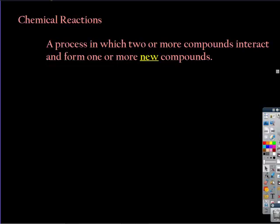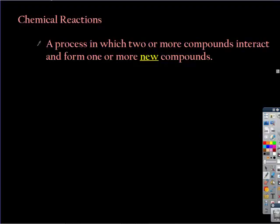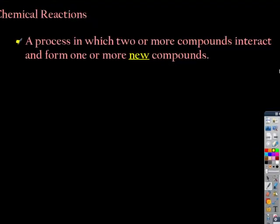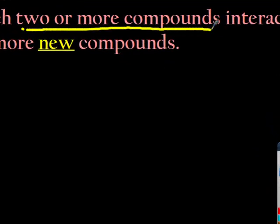A chemical reaction is a process by which two or more compounds or elements interact to form one or more new compounds, and this is essential — you have to have something new produced. Sometimes things can look like chemical reactions and not actually be chemical reactions.